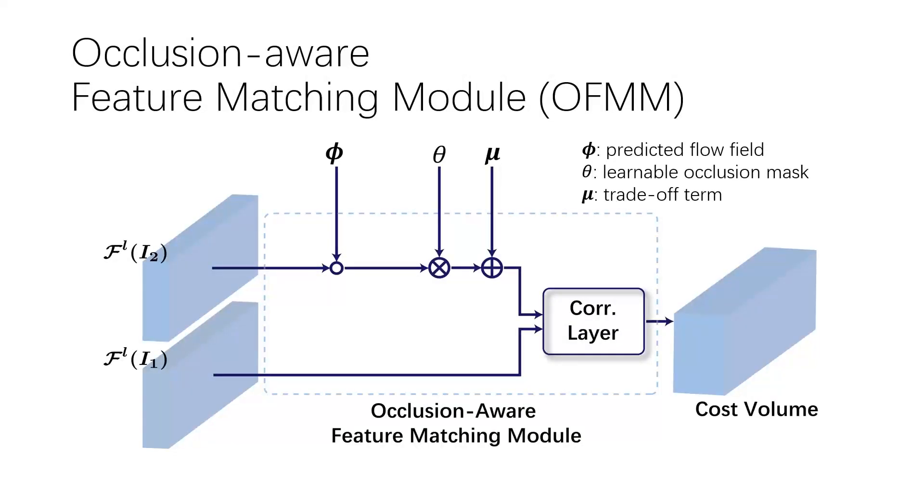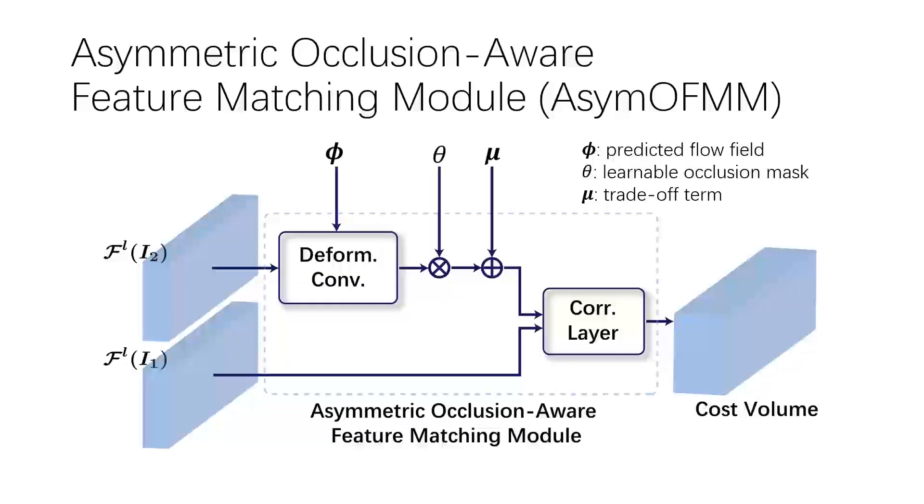Our learnable occlusion mask, denoted by theta, filters useless information immediately after the warping operation. There is an additive trade-off term, denoted by mu, which facilitates the learning of occlusions. We further propose the asymmetric occlusion-aware feature matching module, which introduces an extra deformable convolutional layer prior to the warping operation.